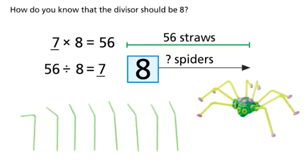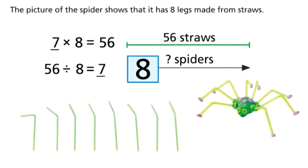How do you know that the divisor should be 8? The picture of the spider shows that it has 8 legs made from straws.